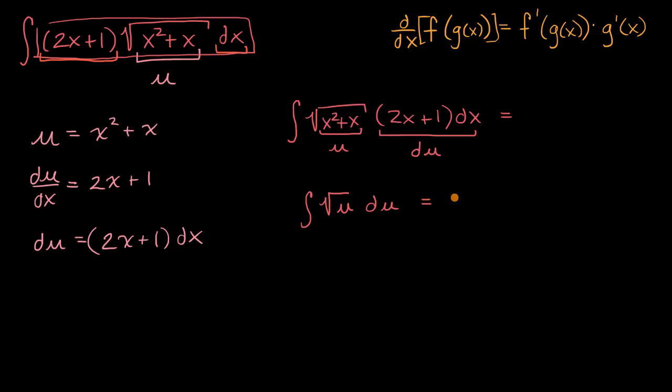If you are still confused, you might recognize it if I rewrite this as u to the one-half power, because now we could just use the reverse power rule to evaluate this, and then we would have to undo the substitution. Once we figure out what this antiderivative is, we would then reverse substitute the x expression back in for the u.